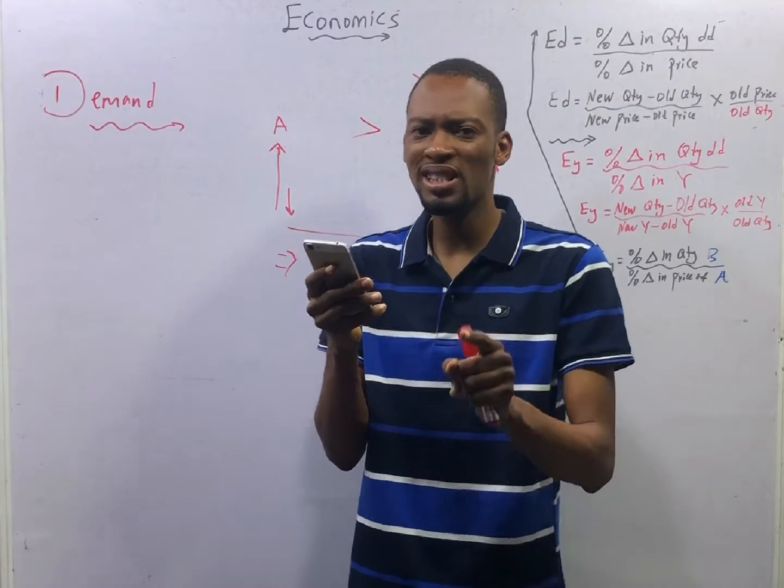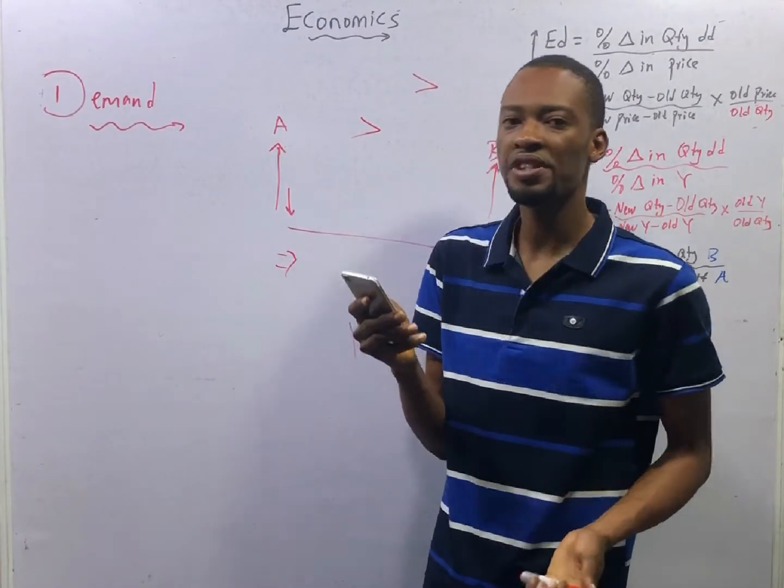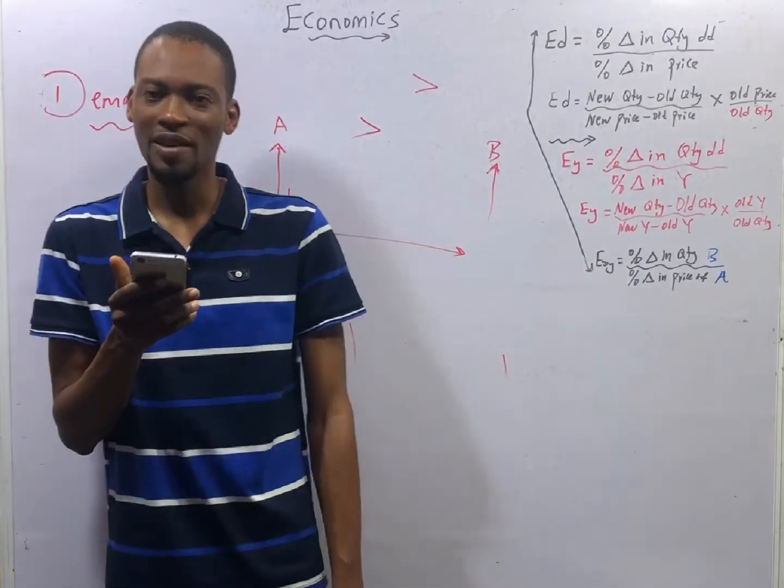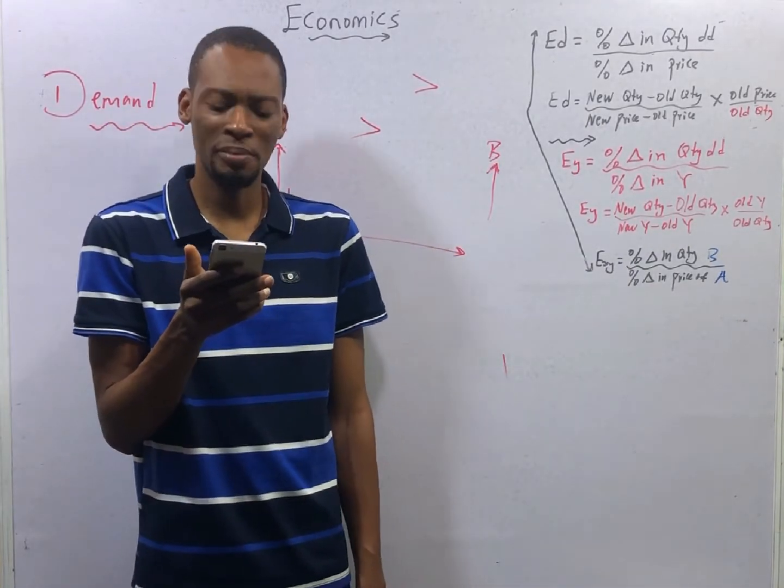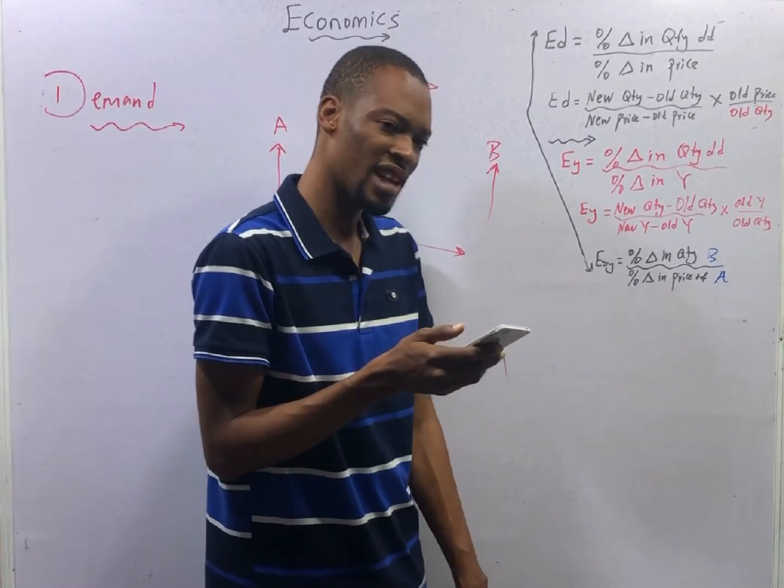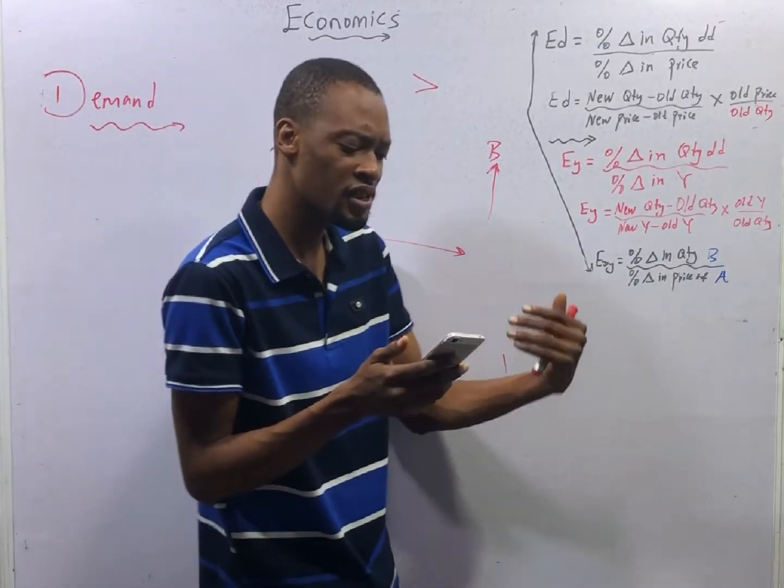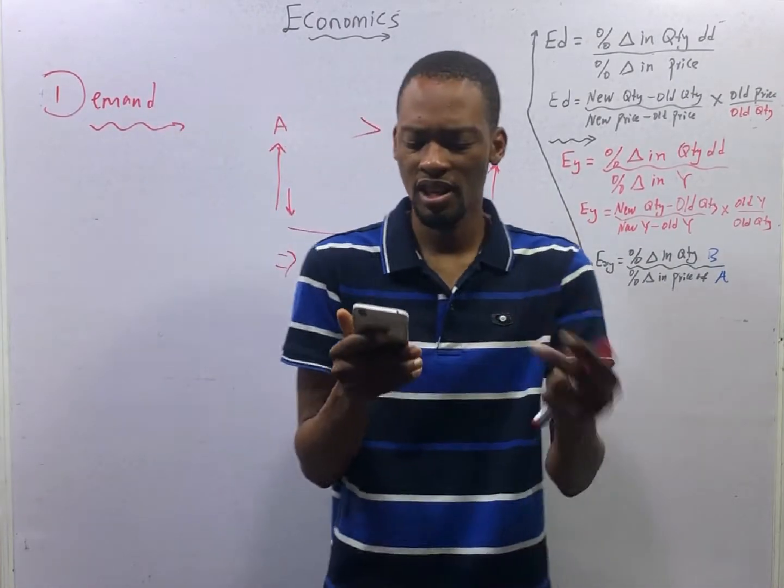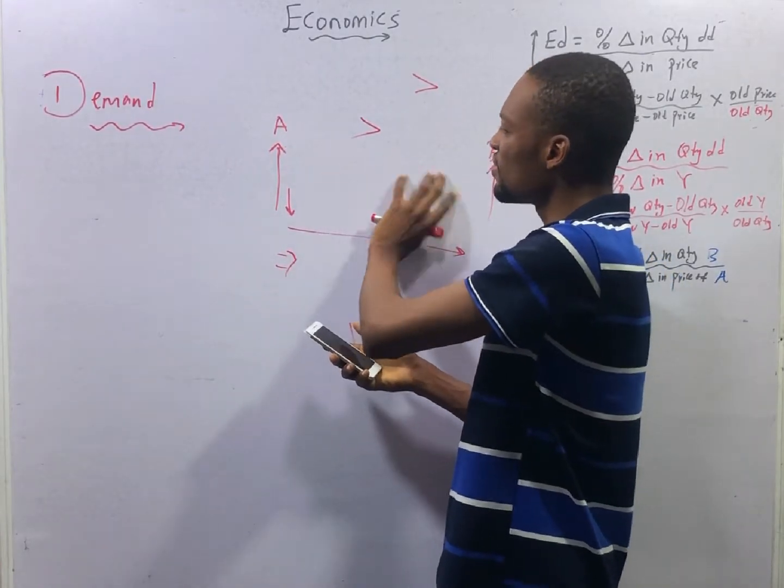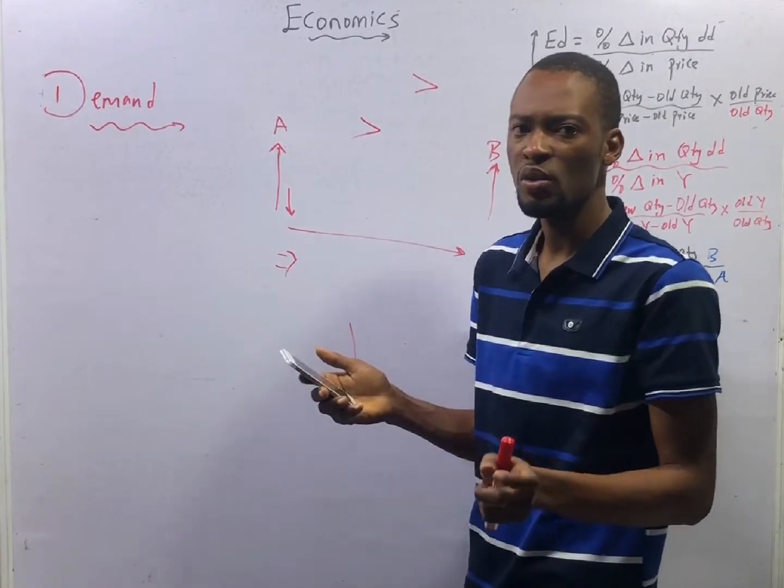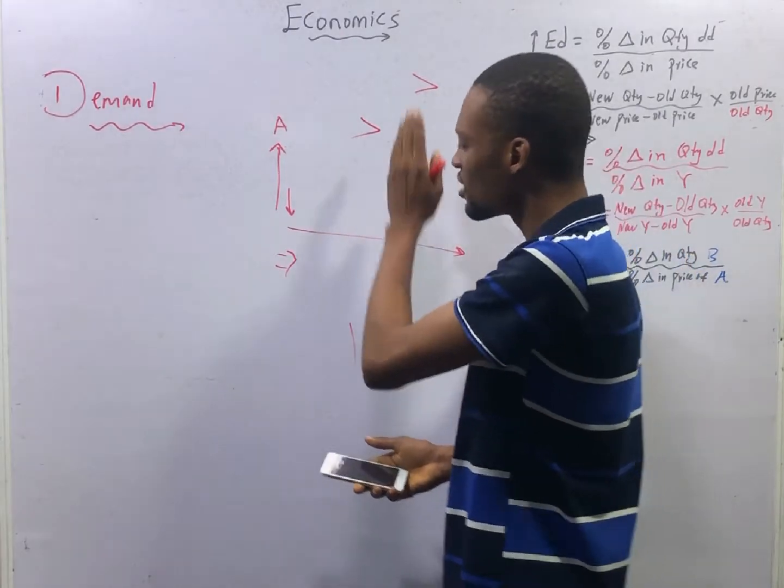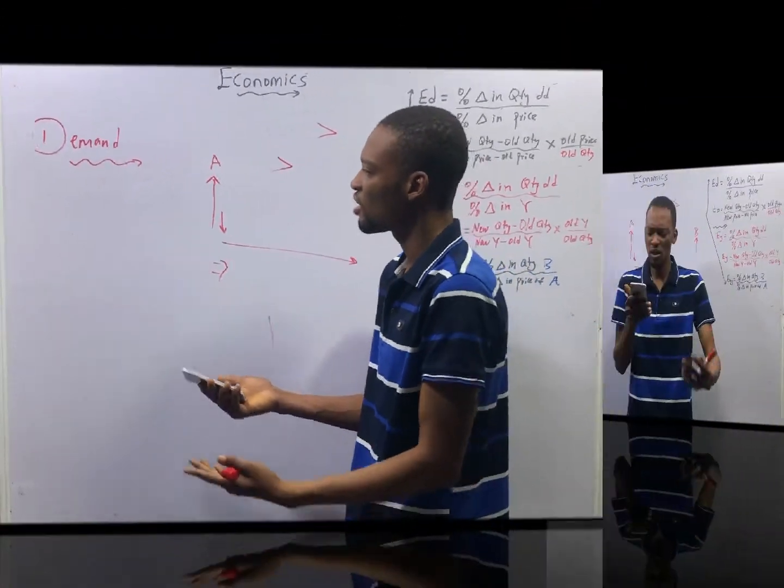If the demand for one commodity excludes another, it is said to be dash. A. Complementary demand. B. Competitive demand. C. Composite demand. And D. Derived demand. I explained this earlier, like few minutes ago. I said that, if the demand for one commodity excludes the other, then they are said to be alternatives. And when goods are alternatives, they are under competitive demand. Which means, what one can do, the other one can do it. So, you can either get this or that, not the two, because they serve the same purpose.